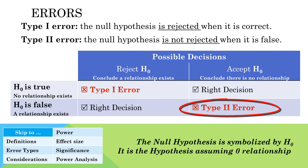A type 2 error is the opposite. A type 2 error occurs when the researcher mistakenly accepts the null hypothesis. If the null hypothesis is accepted, it means that the researcher has not found a relationship among variables. So a type 2 error happens when there is a relationship but the researcher does not find it.